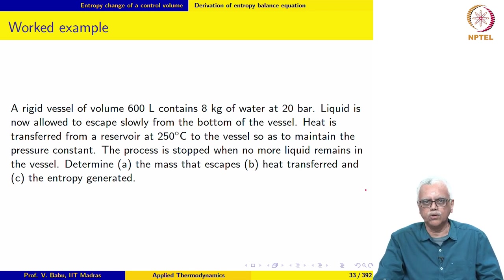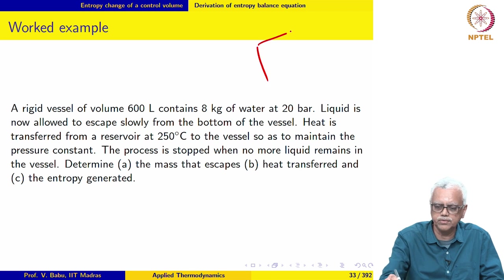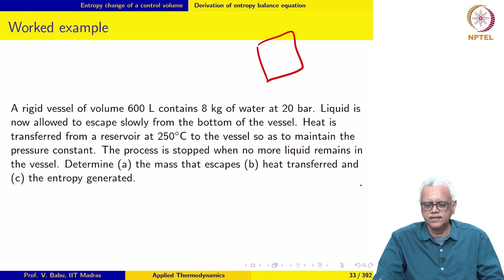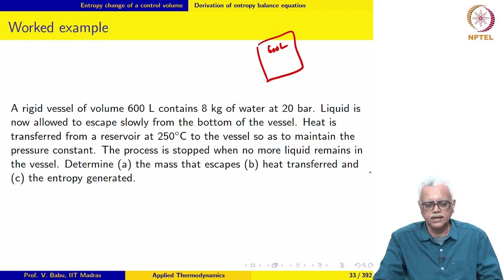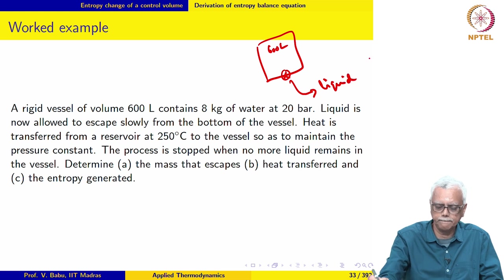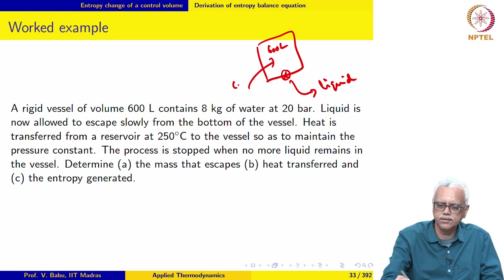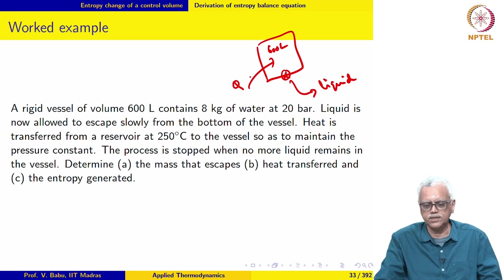The next example also involves an unsteady flow situation. A rigid vessel of volume 600 liters contains 8 kg of water at 20 bar. Liquid is allowed to escape slowly from the bottom of the vessel, and heat is transferred from a reservoir at 250 degree Celsius to maintain the pressure constant. The process stops when no more liquid remains, and we must determine the mass that escapes, the heat transferred, and the entropy generated.